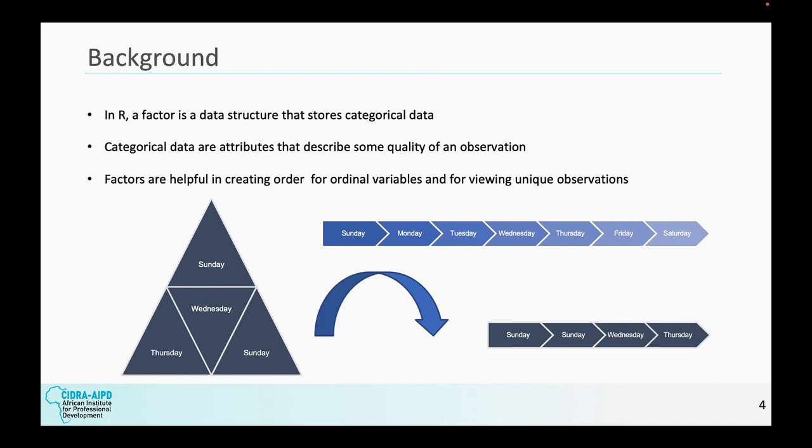Taking a little step back, categorical data are attributes that describe some quality of an observation. So is it red? Is it blue? Is it green? Is it Sunday, Thursday, Wednesday? Something that is not easily to quantify, but is nominal in nature. In other words, a name. So factors are helpful for actually creating this order and actually viewing the unique observations that are within a data set. So the levels for this guy right here, this factor would be Sunday, Wednesday, and Thursday. All of these could apply if we had a large jumble of data, and it would actually straighten it out into what is making up that data, which are these days.